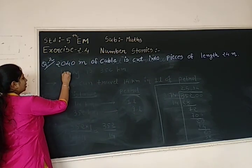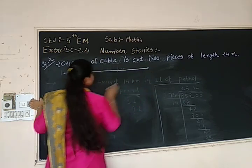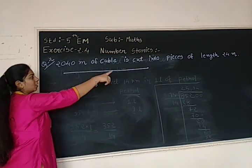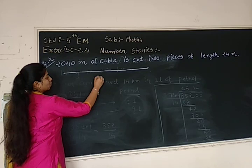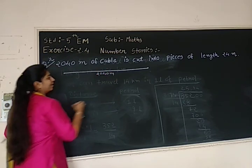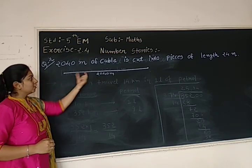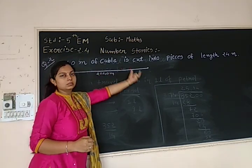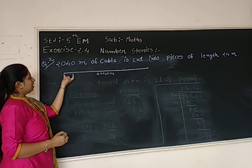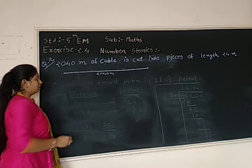That means it is something like this. See, it is a big cable. The total length of this cable is what? 2040 meters. It is the total length. This cable is cut into small small pieces and the length of each piece is 24 meters. That is given in the question.